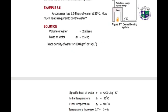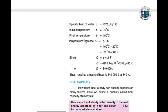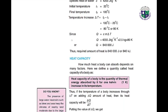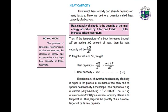Example 8.3: A container has 2.5 liters of water. Volume, mass, specific heat of water, initial temperature, final temperature, and change in temperature are given. We put all these values into the formula Q equals C·m·ΔT to find the amount of heat. Heat capacity of a body is the quantity of thermal energy absorbed by it for 1 Kelvin increase in its temperature. Delta Q over delta T gives the heat capacity, which equals mass times specific heat capacity.